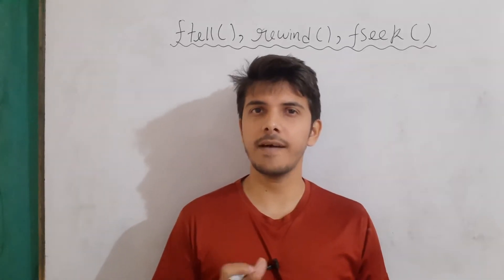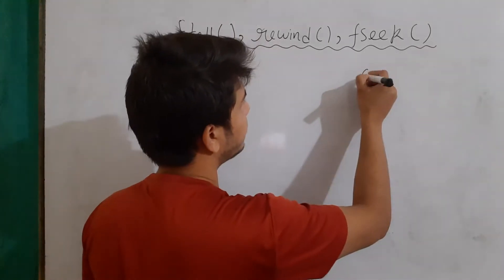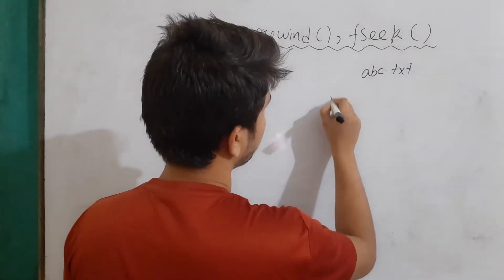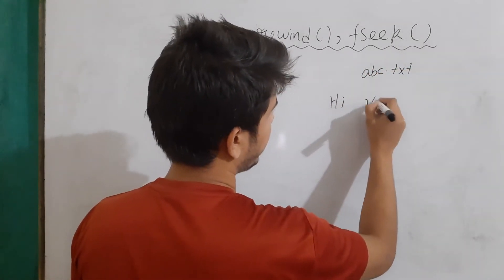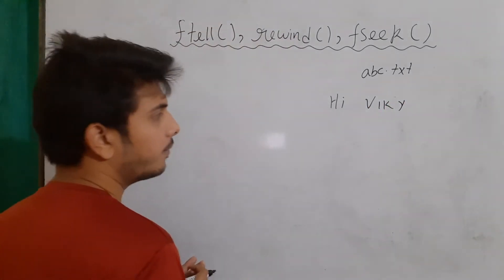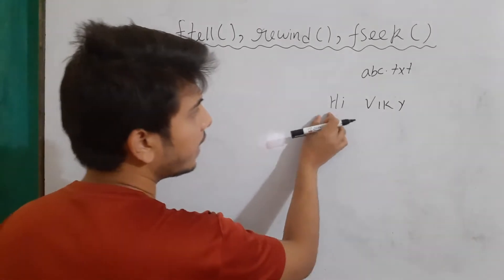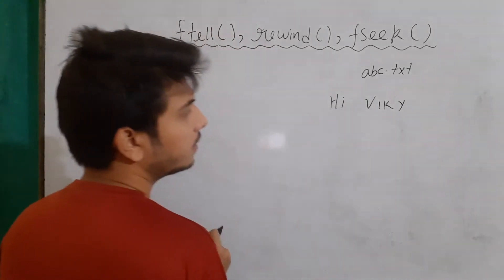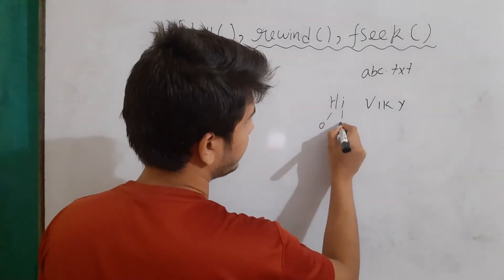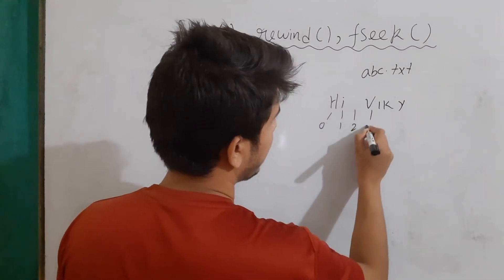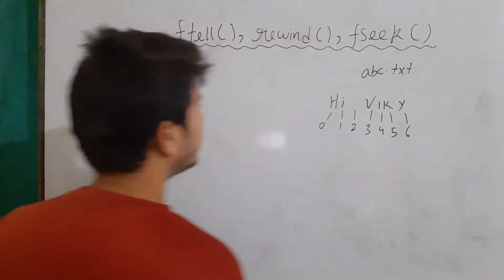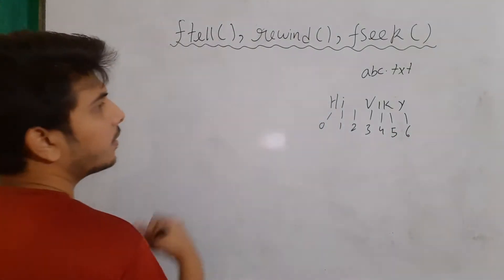First of all, let's suppose the file exists with the name abc.txt, and the content is 'hi wiki'. One thing to remember here is that the content is indexed with some number. For example, the index for 'h' is 0, index for 'i' is 1, index for space is 2, then 3, 4, 5, 6 — just like an array of characters or strings.